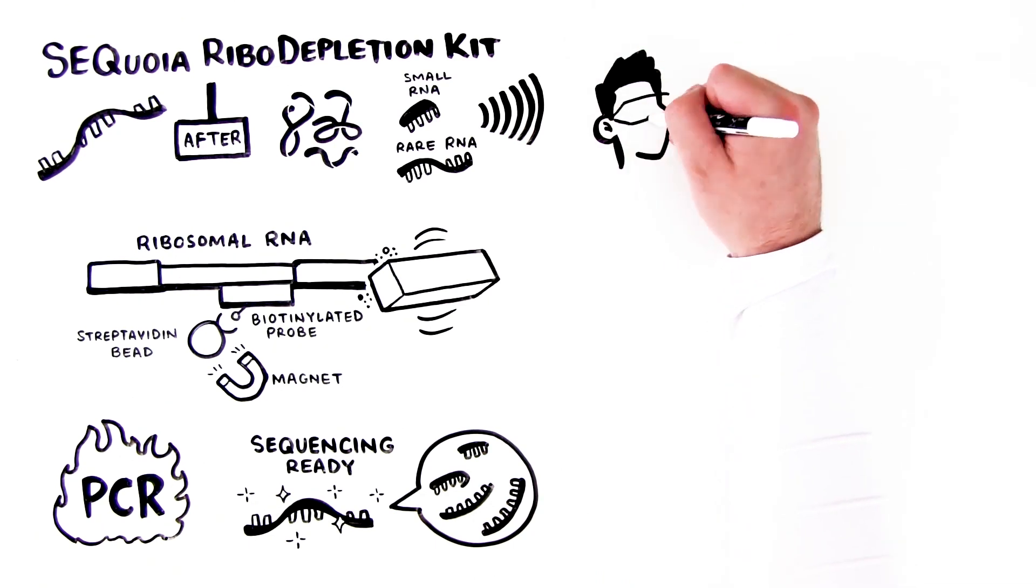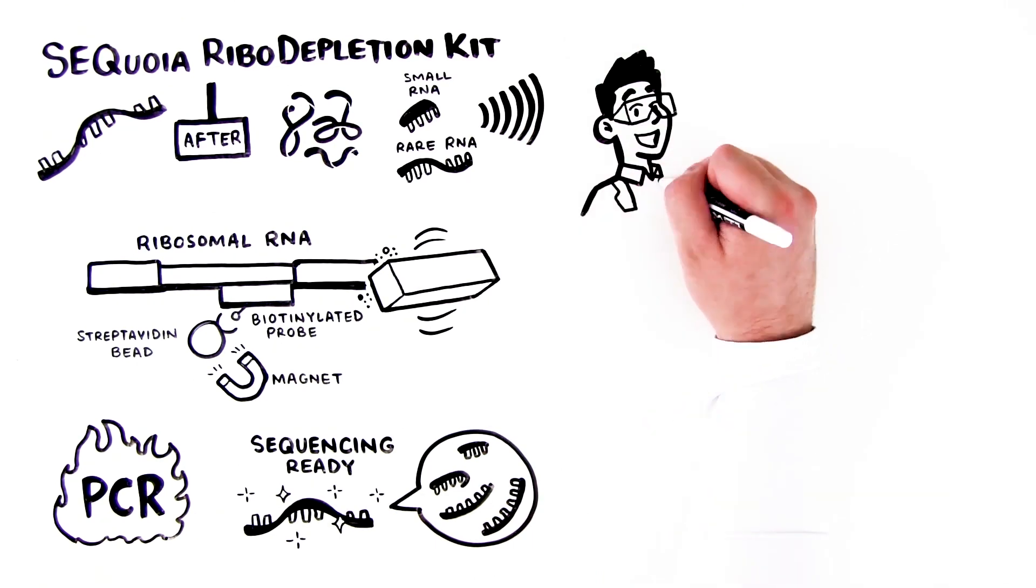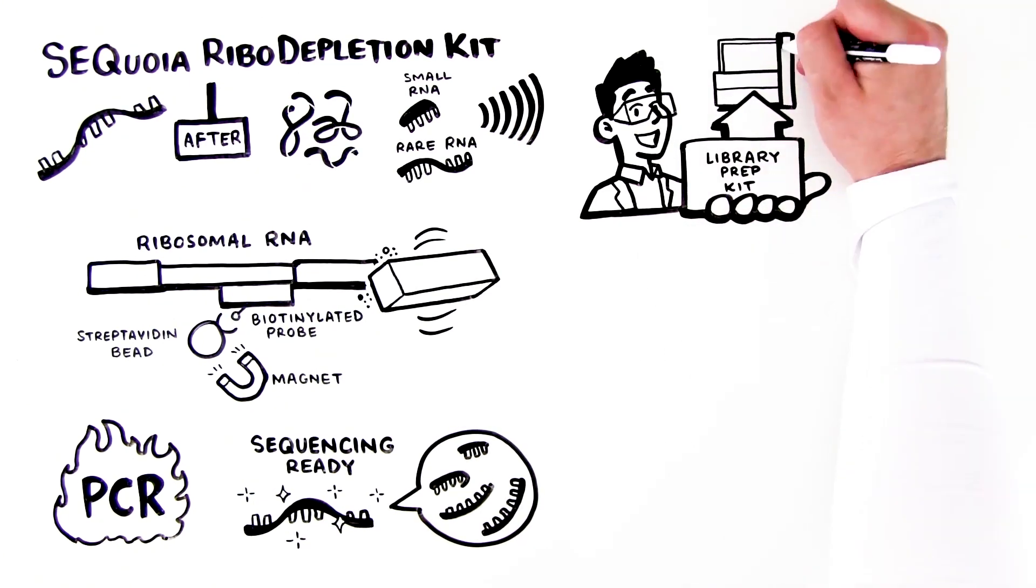Sequoia ribodepletion offers a unique solution that is compatible with most commercially available library preparation kits, designed for use in an Illumina sequencing platform.